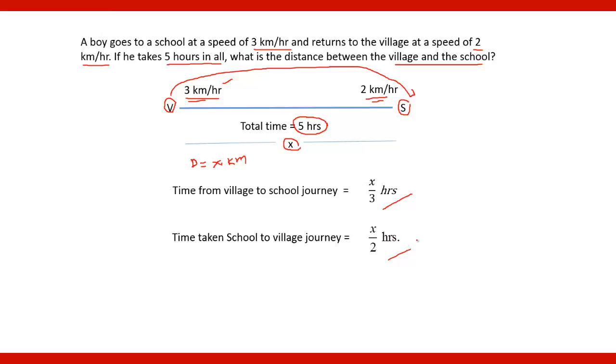Therefore, the total time will be x by 3 plus x by 2 is equal to 5 hours. This 5 hours is the total time given to us. If you solve this linear equation, you will get x is equal to 6 km, and therefore the distance between village and school is 6 km.